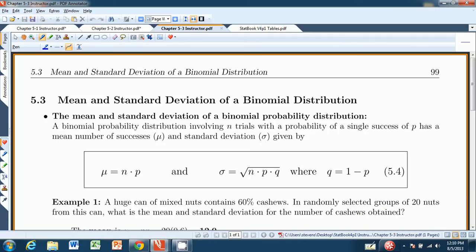Hello, and welcome to Chapter 5.3 from the Introduction to Statistics Think and Do book. In this chapter, we're going to look at the mean and standard deviation of a binomial distribution.